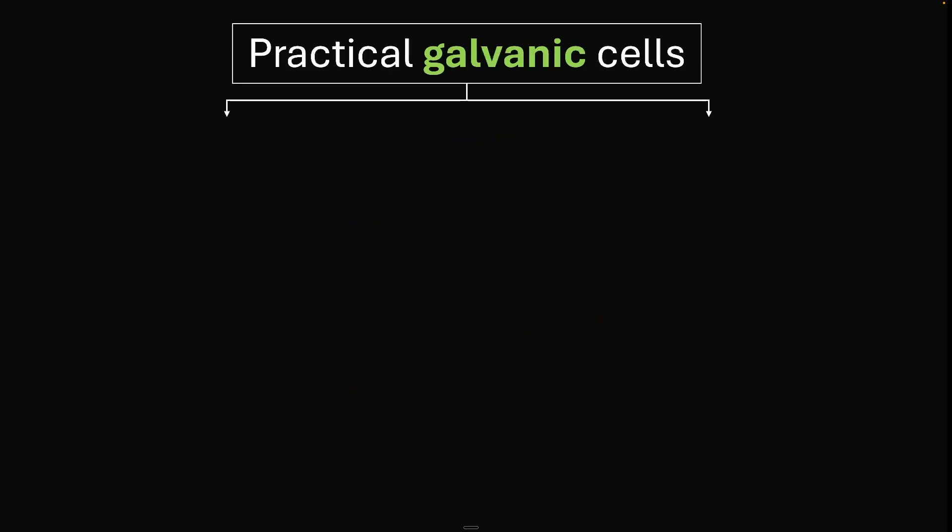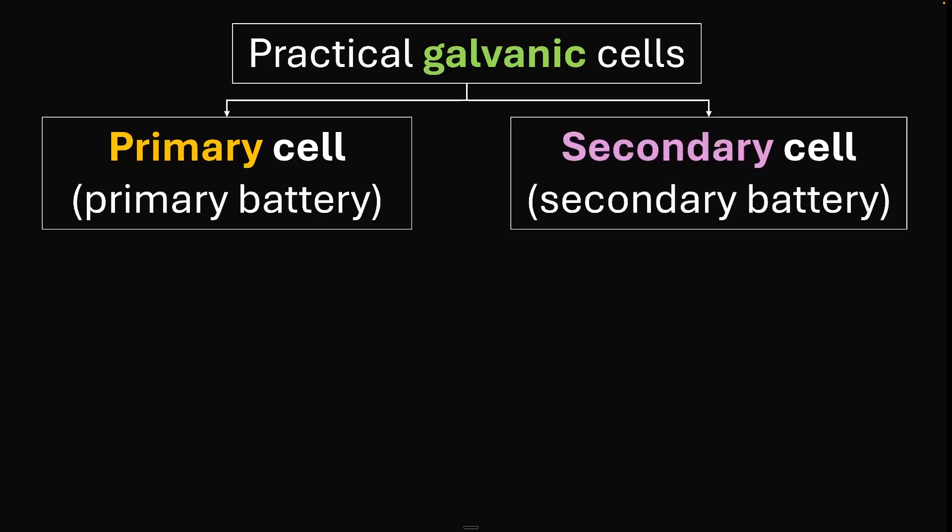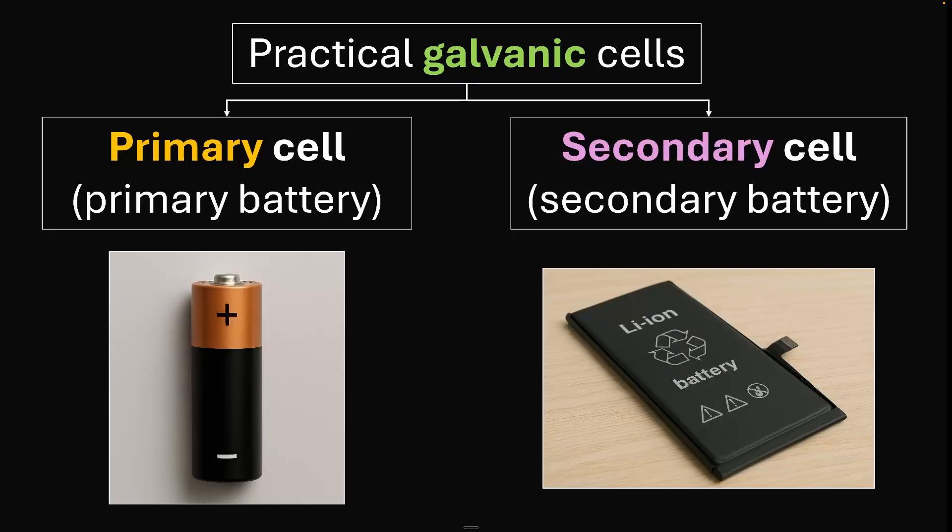Scientists built two kinds of practical galvanic cells. The first is the primary cell or primary battery. Remember that a battery could be one cell or more. We also have a secondary cell. The primary cell is found in alarm clocks, wall clocks, or TV remotes.